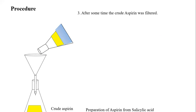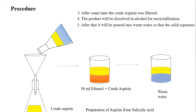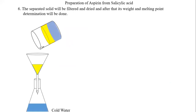Once the crude aspirin is filtered, we need to recrystallize it. The crude aspirin is dissolved in 30 ml of ethanol for recrystallization, and then added to warm water. After the addition of crude aspirin into the warm water, it separates as a solid. This solid is filtered again — in the funnel we get the aspirin, and in the conical flask we have the warm water.